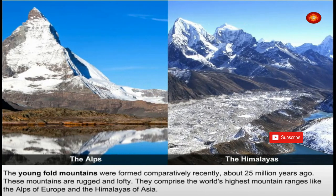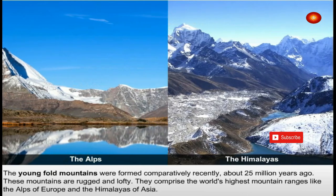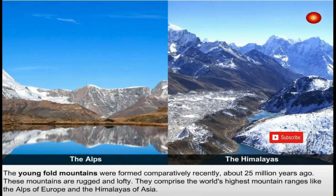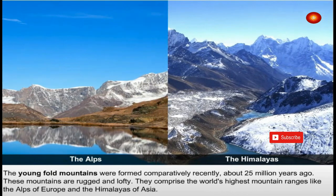The young fold mountains were formed comparatively recently, about 25 million years ago. These mountains are rugged and lofty. They comprise the world's highest mountain ranges like the Alps of Europe and the Himalayas of Asia.